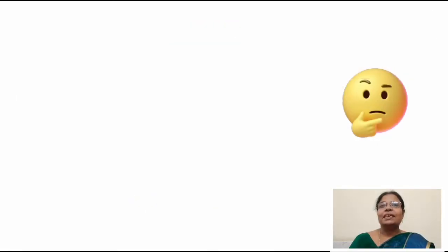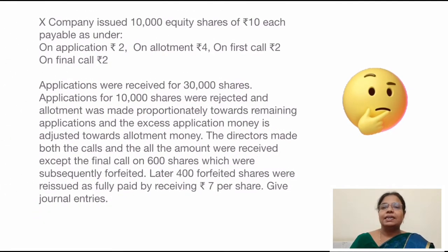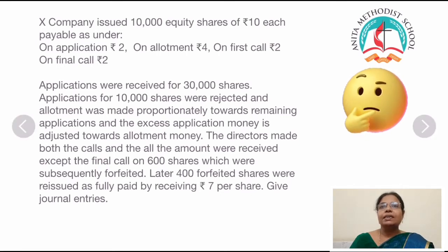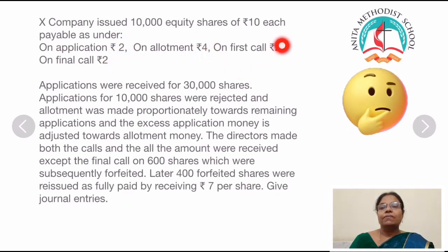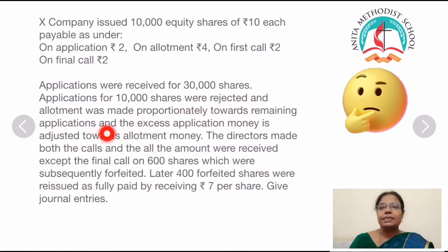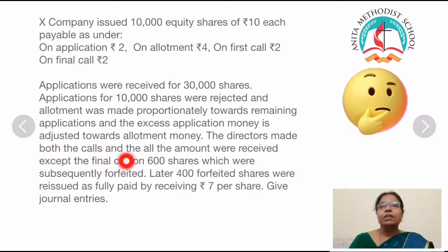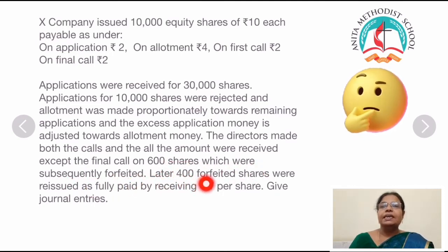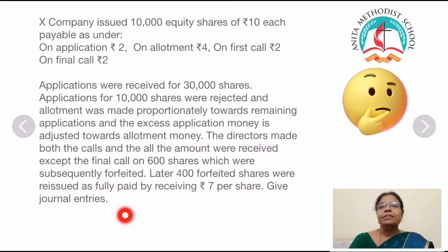Children, let us do one more sum. X Company issued 10,000 equity shares of rupees 10 each payable as under: on application rupees 2, on allotment rupees 4, on first call rupees 2, on final call rupees 2. Applications were received for 30,000 shares. Applications for 10,000 shares were rejected and allotment was made proportionately to the remaining applications and the excess application money is adjusted to allotment money. The directors made both the calls and all the amounts were received except the final call on 600 shares which were subsequently forfeited. Later, 400 forfeited shares were reissued as fully paid by receiving rupees 7 per share. Give journal entries.